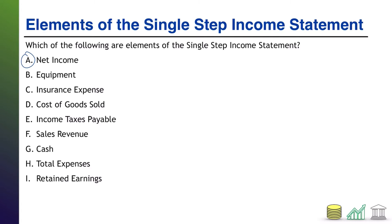A — net income — that absolutely appears on the income statement. It's the final line. It's the subtraction of revenue and expense. B — equipment — no, that is an asset on your balance sheet. C — insurance expense — that is correct. All expenses are going to show up in the expense section of the income statement. D — cost of goods sold — it doesn't say the word expense, but that is an expense. That is the special name for expenses that are related to merchandise that you sell as a company.